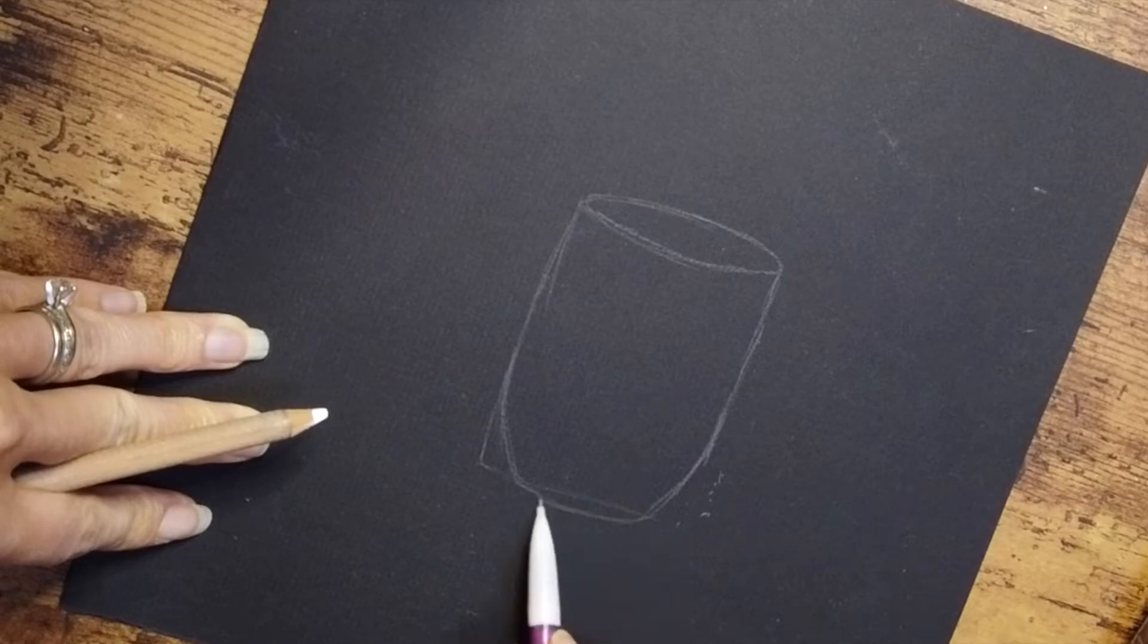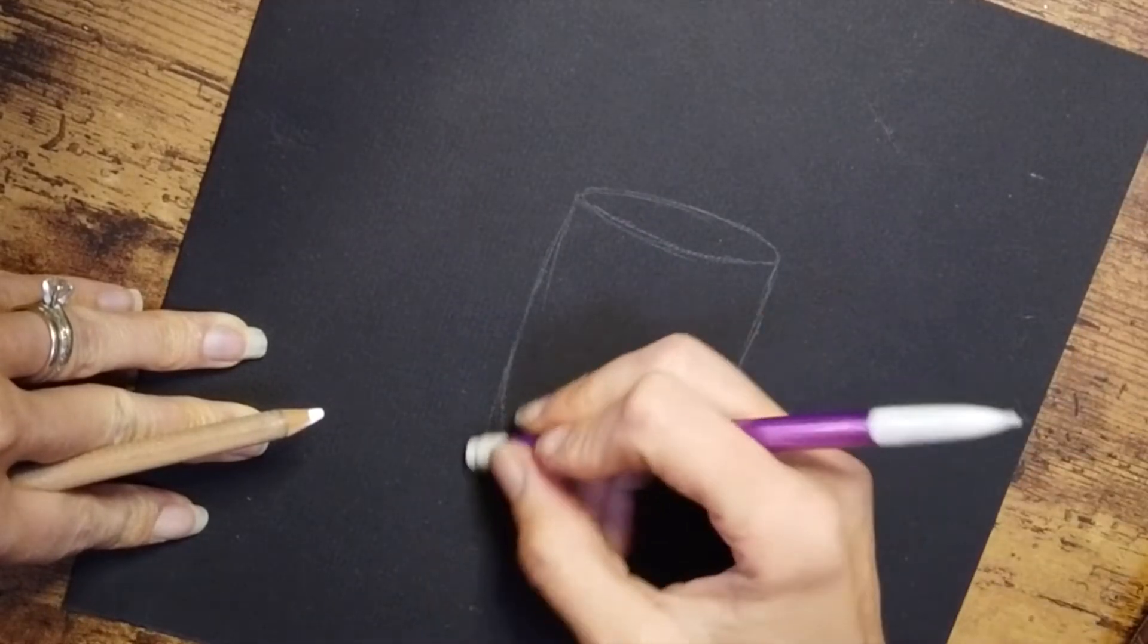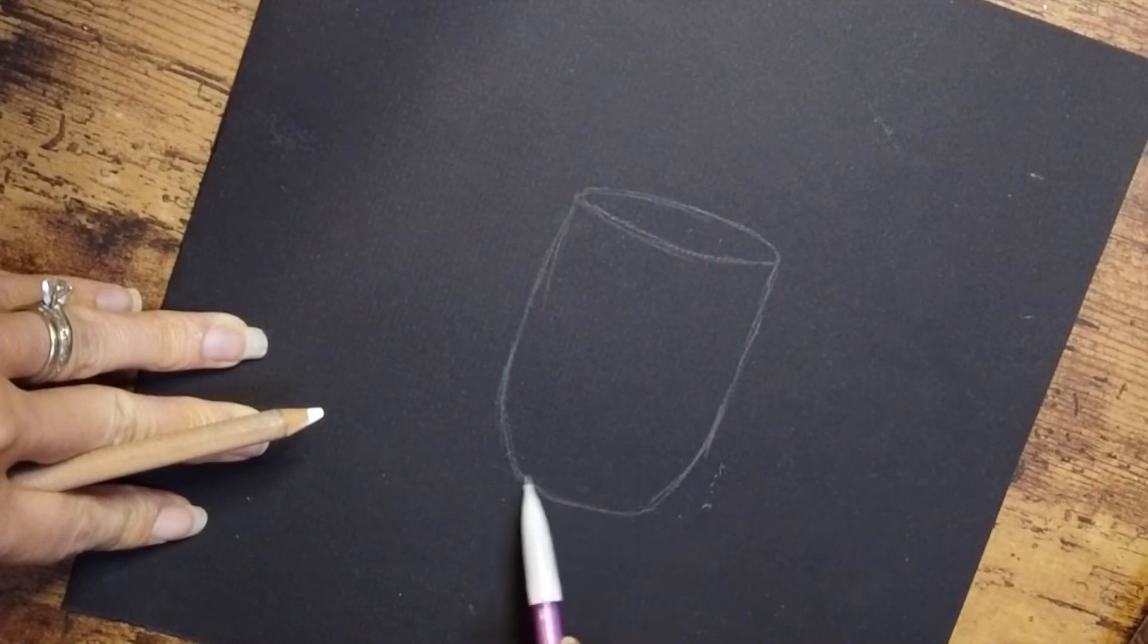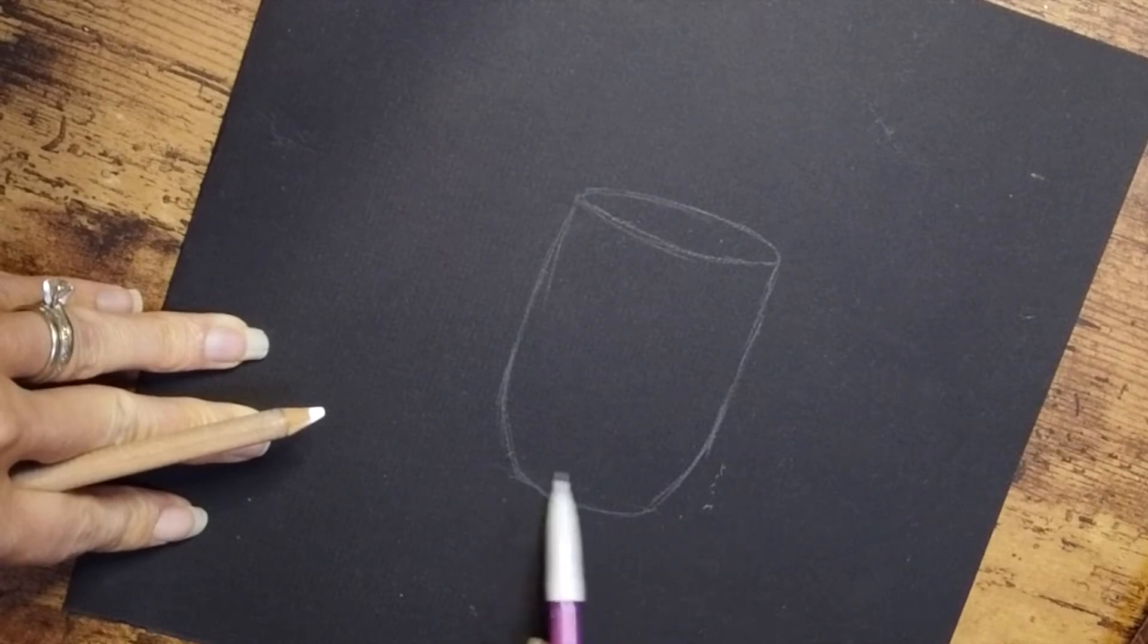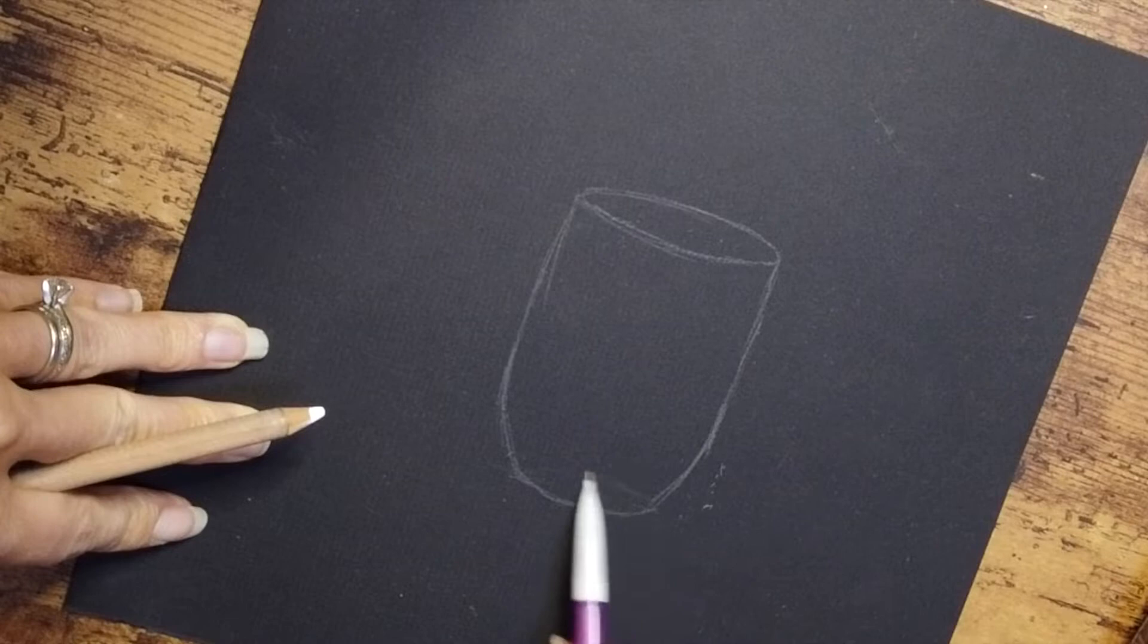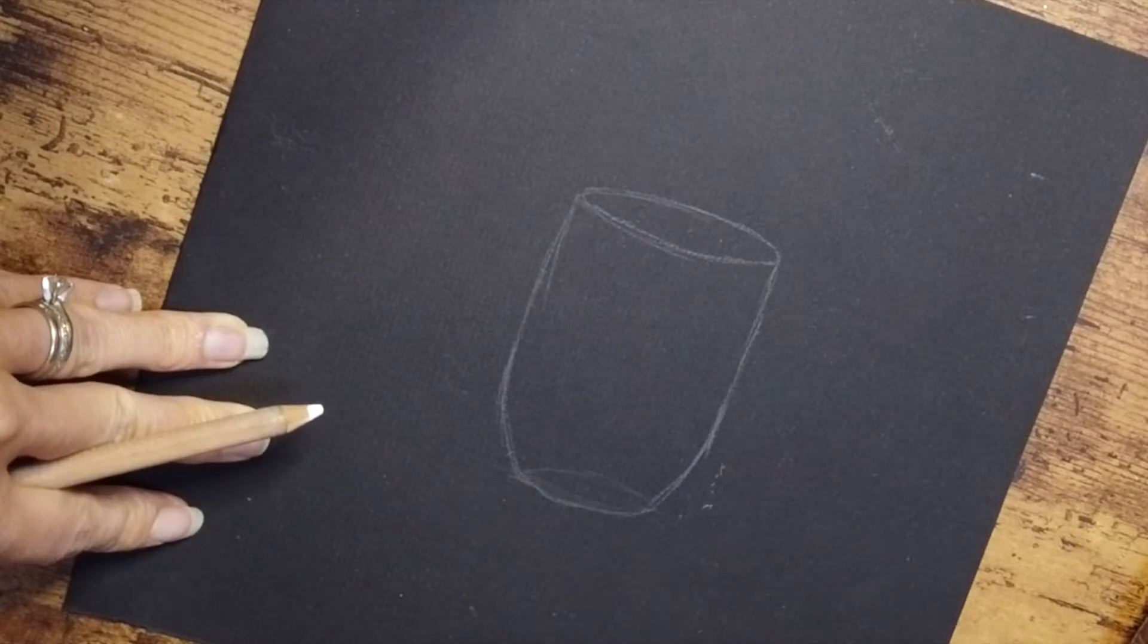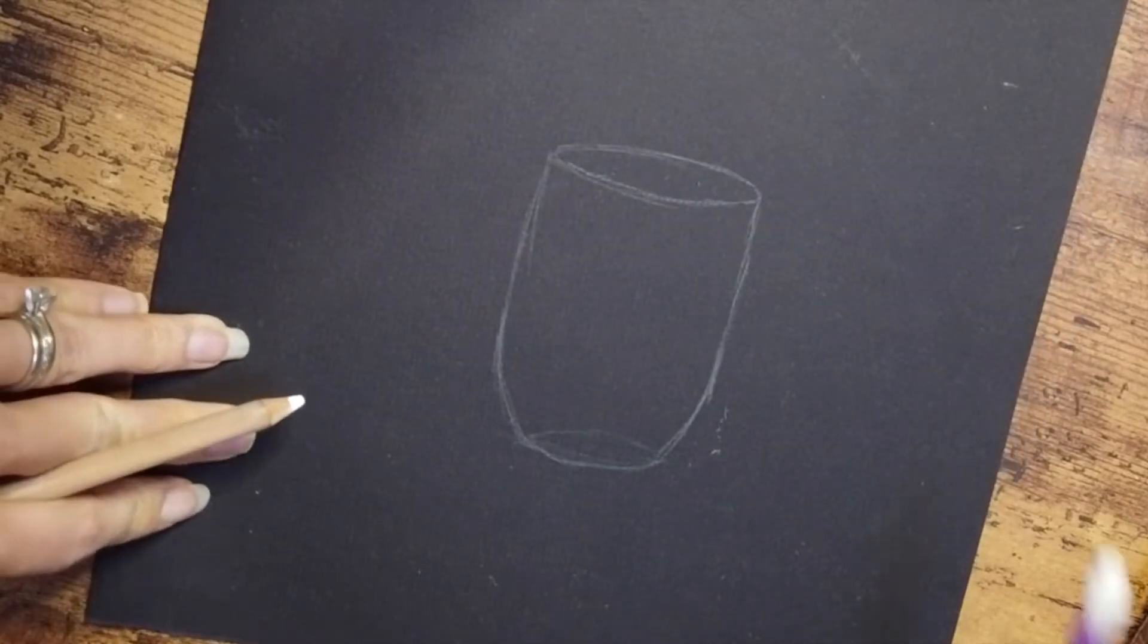And of course I'm freehand drawing this really quickly just to give you guys something to practice, so it's not going to be exactly perfect. But this will be really good practice for you with white charcoal and also with abstracting things. So right now I'm just going to draw in a few guidelines where I know there's going to be highlights.